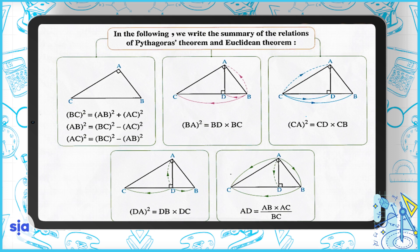Here we can have a summary of the relations of the Pythagorean theorem and the Euclidean theorem. The first one is the Pythagorean theorem, and the other four are the Euclidean theorems.